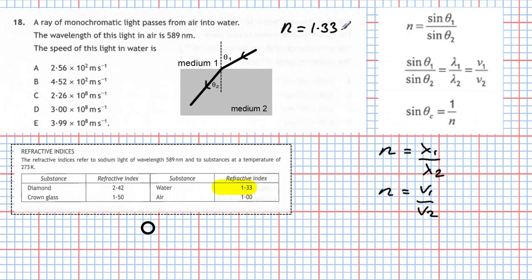Now that means we can use the following equation. We know the refractive index, we know the wavelength of light in the air, and we know the speed of light in the air — that's 3 times 10 to the power 8 meters per second. So we know that v1 is equal to 3 times 10 to the power 8 meters per second.